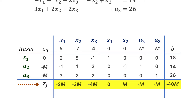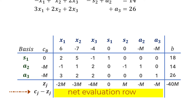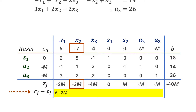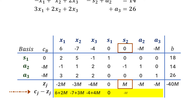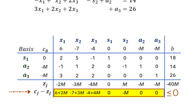For the Cj minus Zj row — the net evaluation row — we subtract the Zj row from the objective coefficients. So 6 minus negative 2m gives 6 plus 2m; negative 7 minus negative 3m gives negative 7 plus 3m; negative 4 plus 4m; then 0, negative m, 0, and 0. We reach the optimal solution when there are no more positive values on this row. This setup is called the initial simplex tableau.